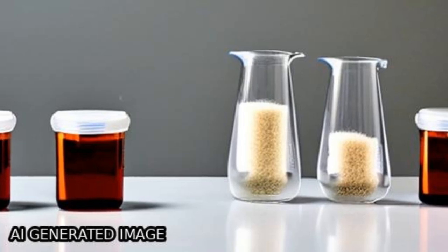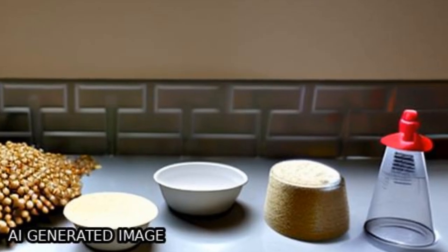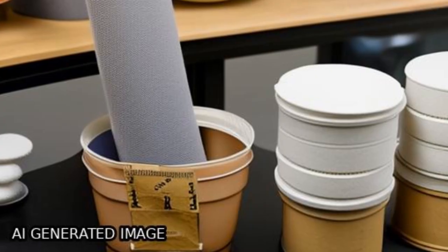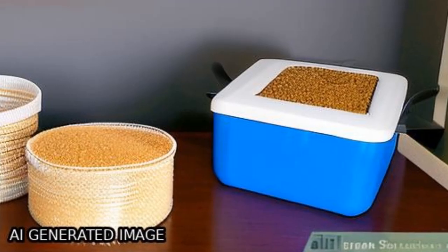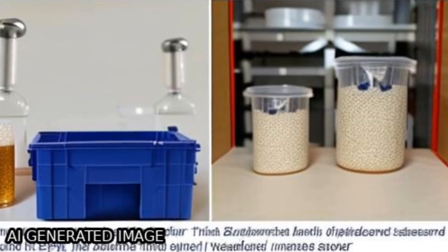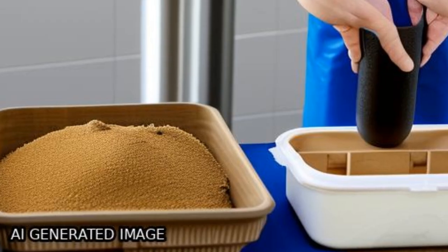This study tests the thermal insulation qualities of loose agave and wheat straw fibers and three new hybrid specimens made with cornstarch as a binder, finding that the hybrid specimens have better thermal conductivity than the loose fibers.